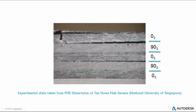Continuous fiber composite laminates exhibit many different failure modes under multi-axial loading, including matrix cracking, fiber breakage or crushing, and delamination. Capturing all of these failure modes concurrently within a simulation can be very important for correctly capturing the behavior of the laminate.